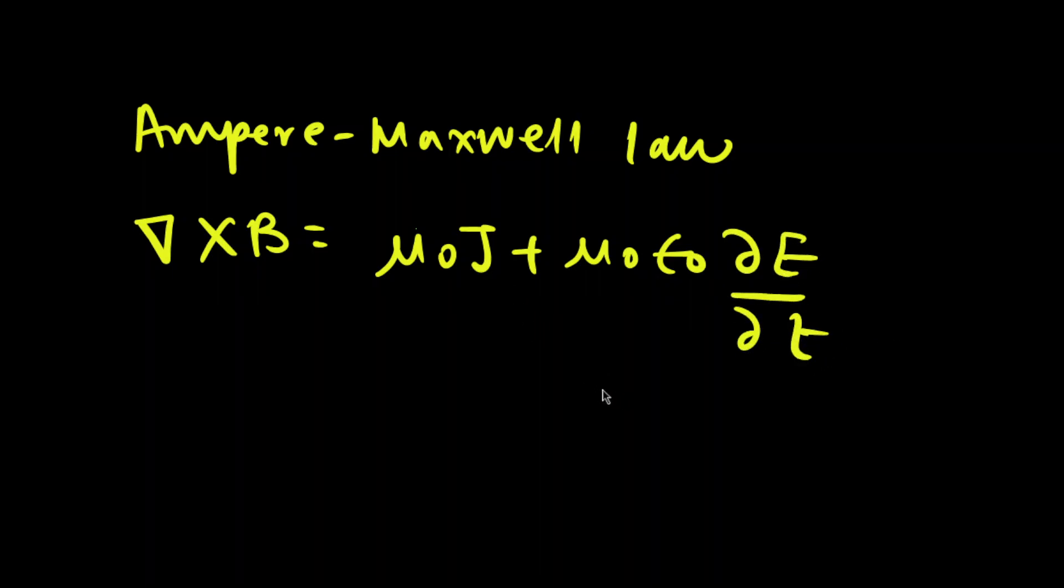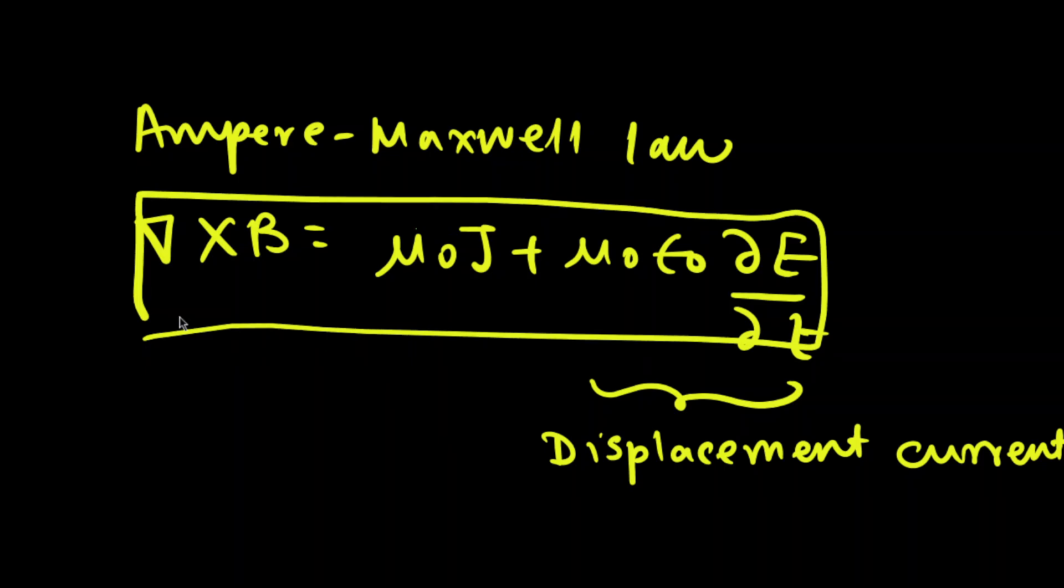This replacement term is for time-varying current or electric field, and this he named as displacement current. So this was Maxwell's correction to Ampere's law.